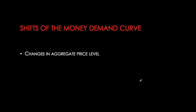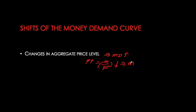Now let's look at factors that shift the money demand curve. The first factor is the aggregate price level. A higher price level increases the demand for money balances, shifting money demand to the right. When the price level increases, it reduces the purchasing power of your nominal money balances. To maintain purchasing power and consume the same basket of goods and services, you increase your nominal demand for money by the same proportion.